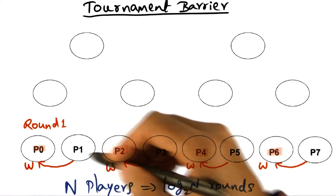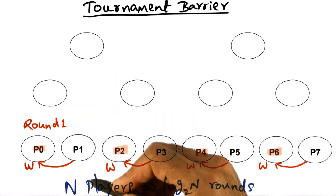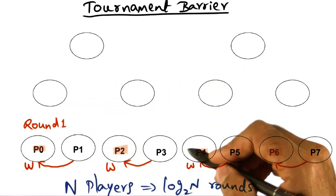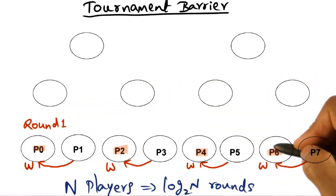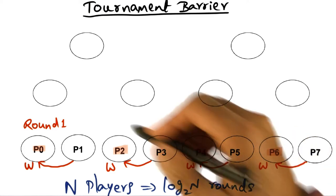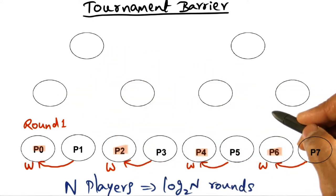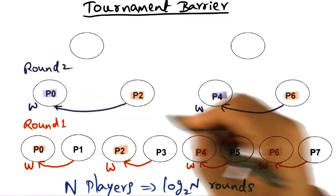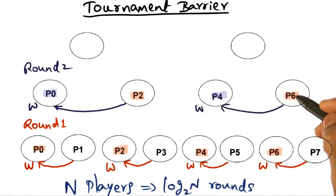So as a result of the first round of matches, P0 will advance to the next round. P2 will advance to the next round, P4 and P6. And once again, in the second round, we're going to fix the matches. And the winner is going to be P0 for round 2, P4 for this bracket for round 2.